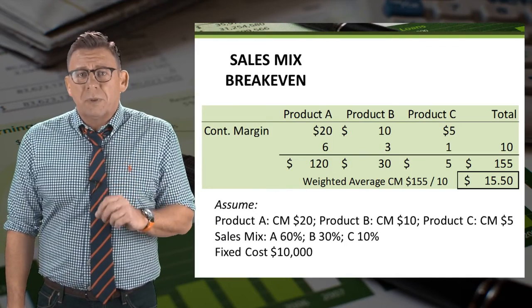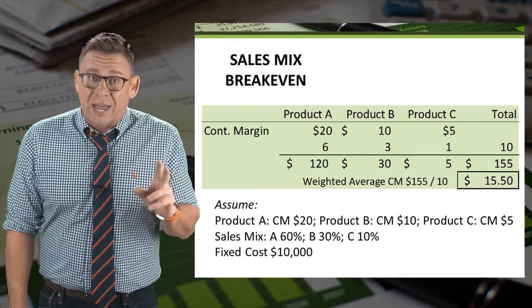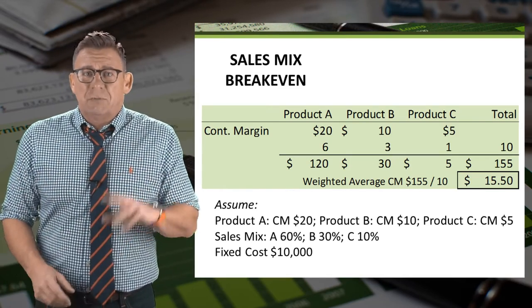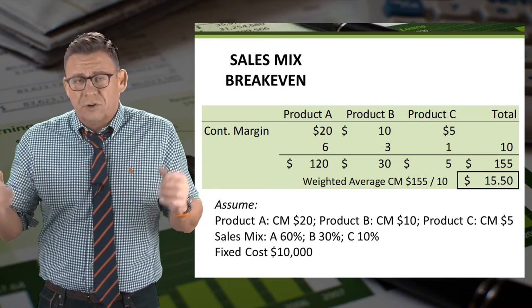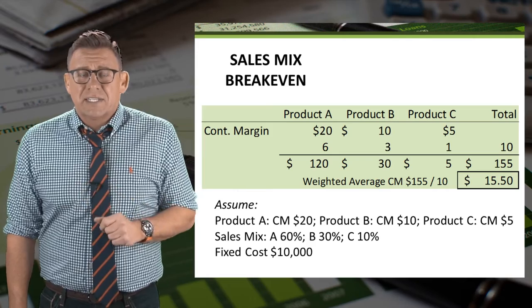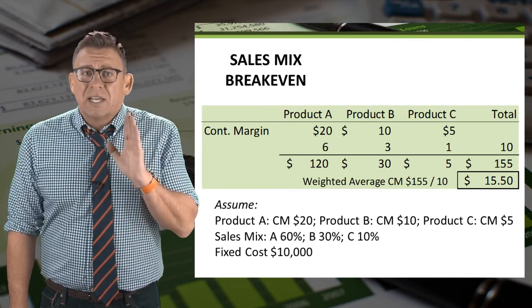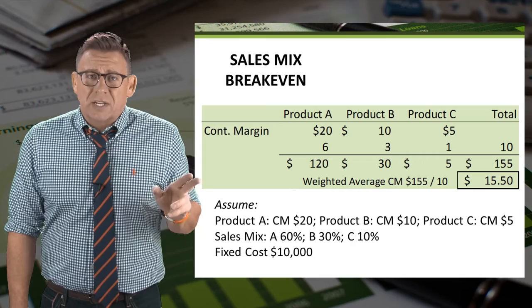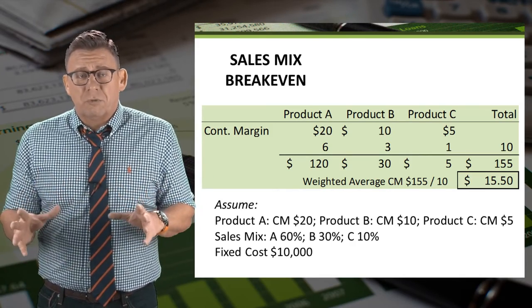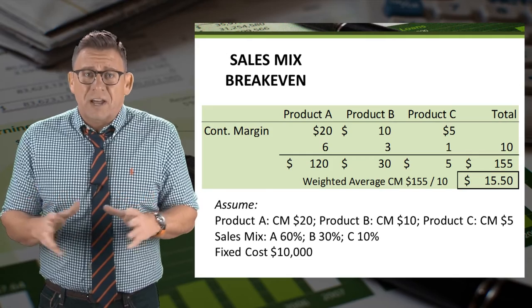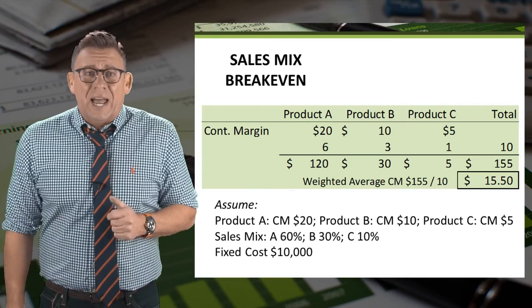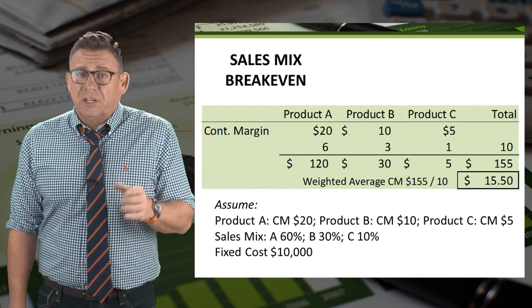First, we multiply the product contribution margin by the product mix. In this case, I used 10 units because that gives me 6 plus 3 plus 1 for a total of 10. So Product A is 20 times 6, Product B is 10 times 3, and Product C is 5 times 1. This gives us a total contribution margin of $155. Then we divide it by the 10 units, and we get a weighted average contribution margin of $15.50.